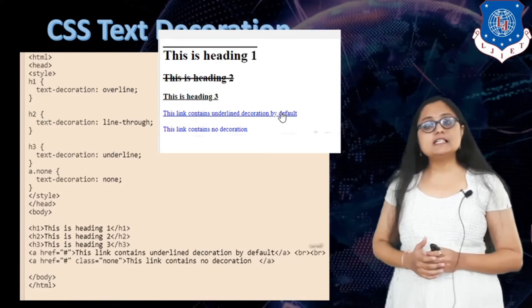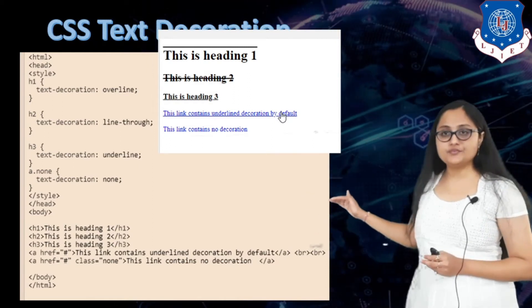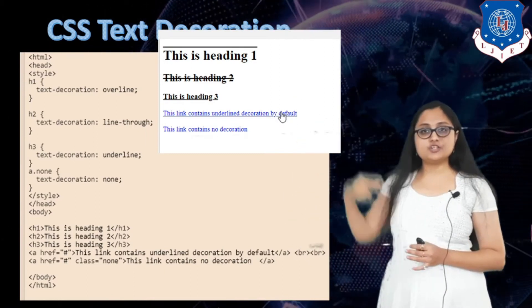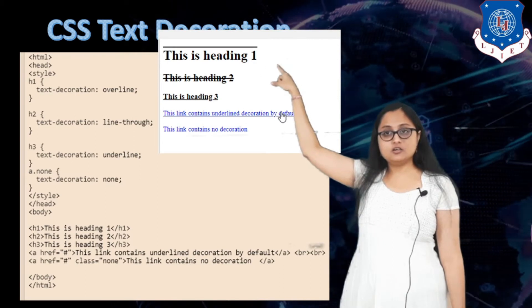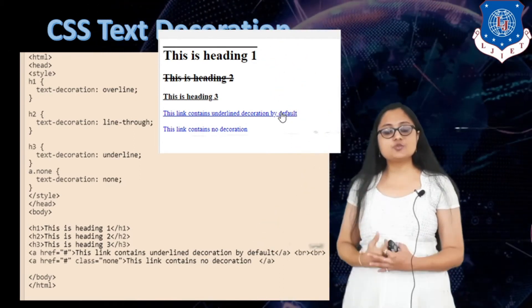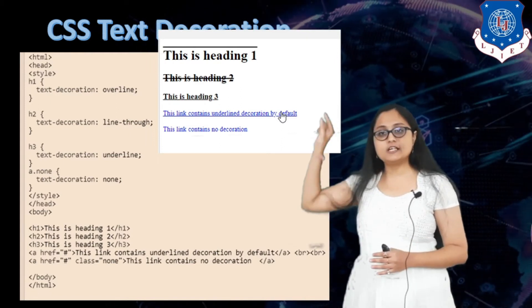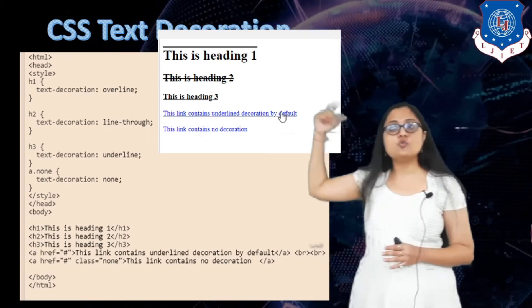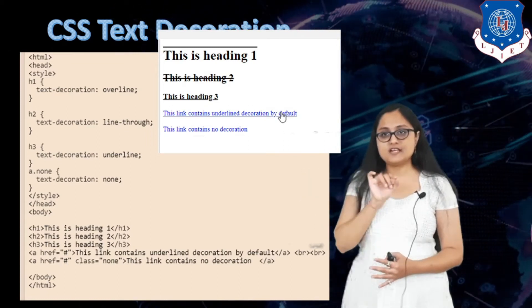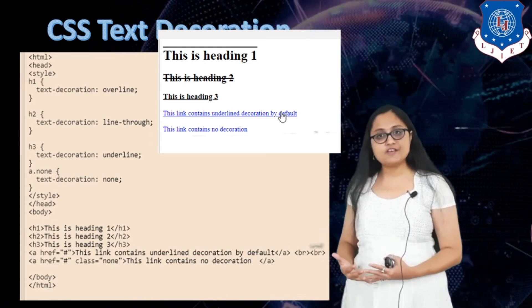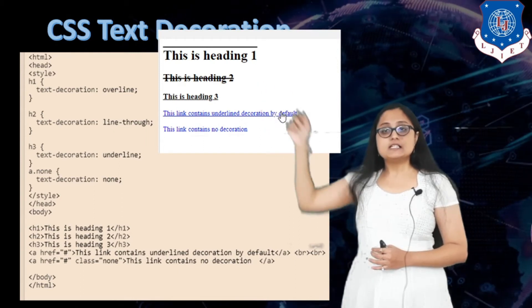The next is CSS text decoration property. You can see I have different headings. For h1 the text decoration is overline — there is a line over the text. For h2 the text decoration is line-through. When you want a horizontal line above the text, you give text-decoration with value overline. When you want a line to go through the text to display that it has been cut, the property value is line-through.